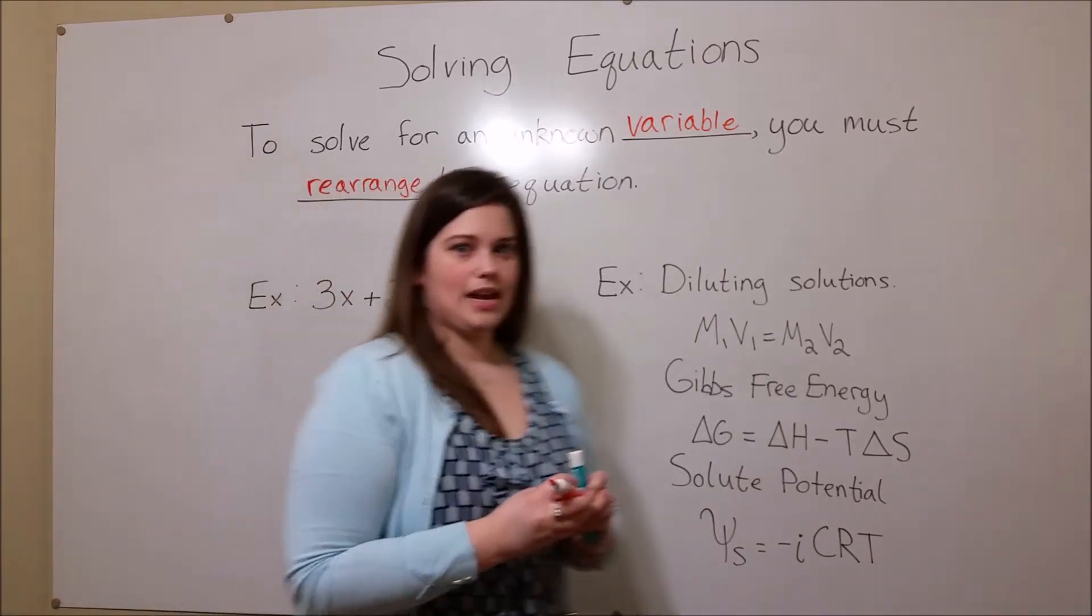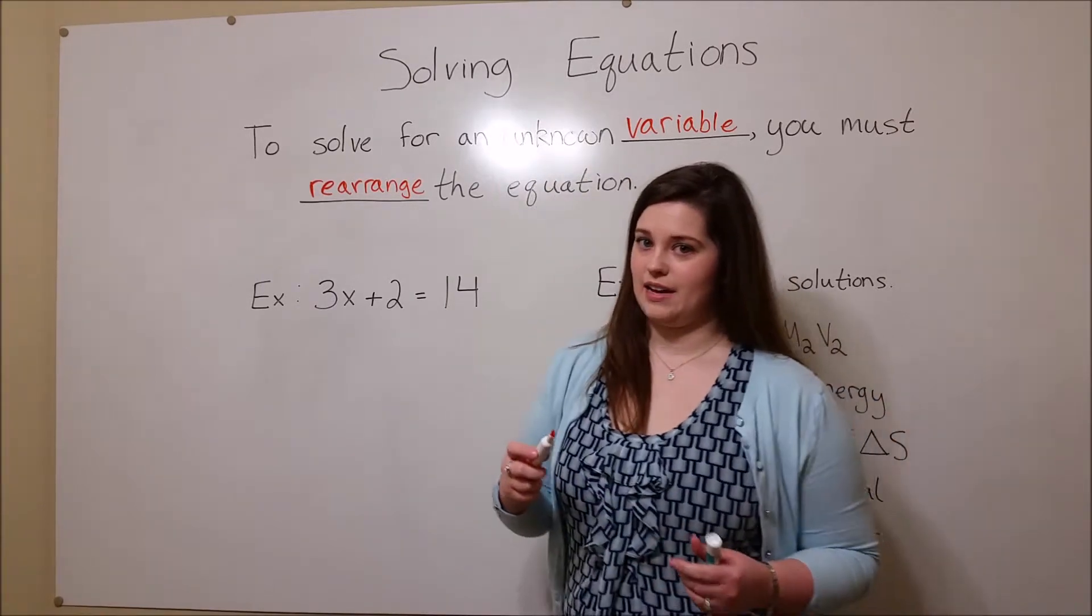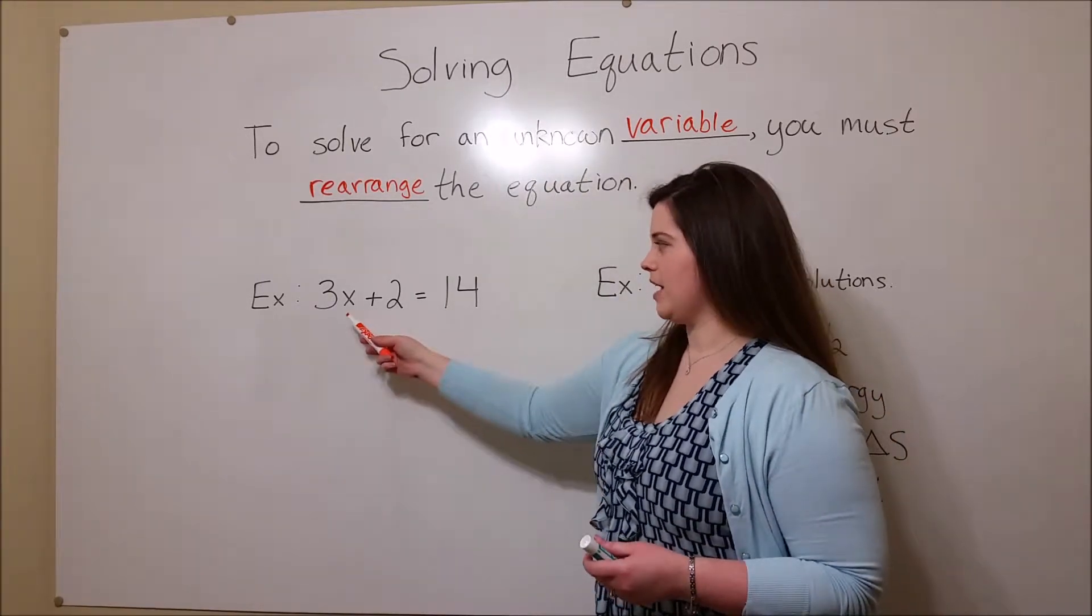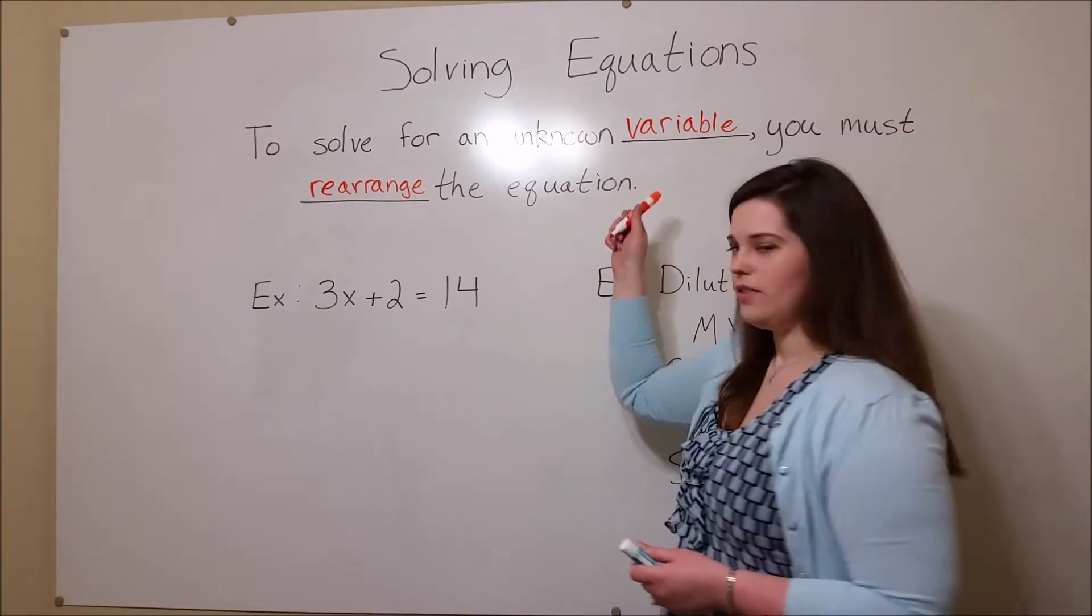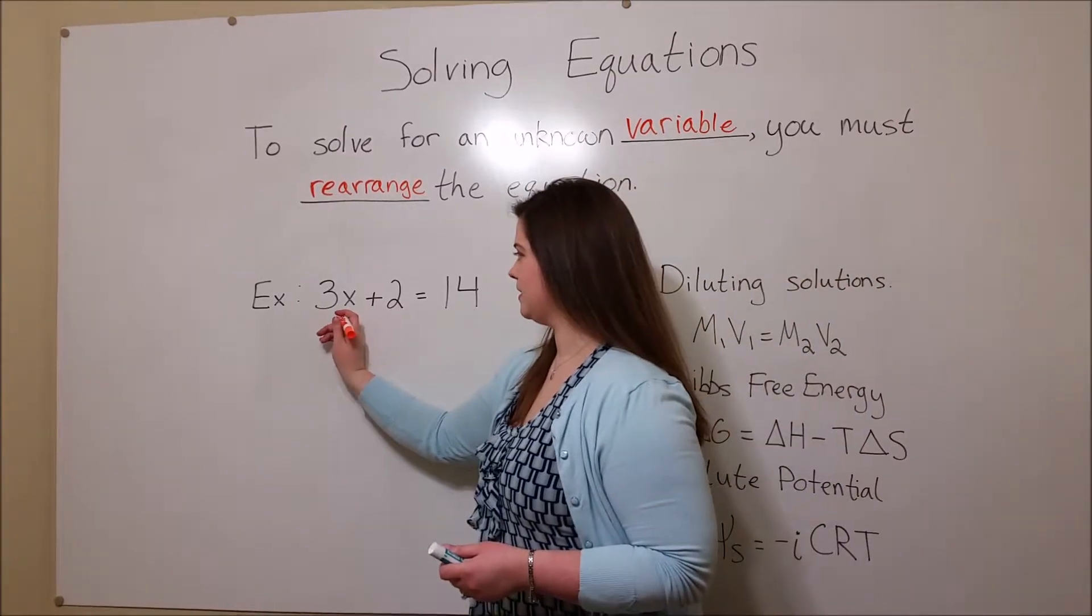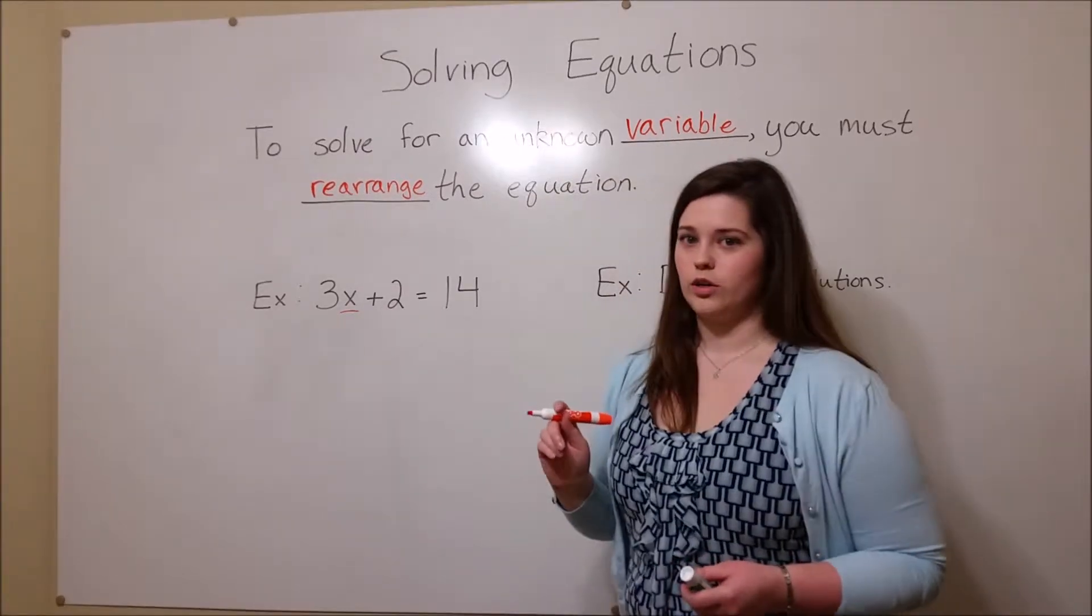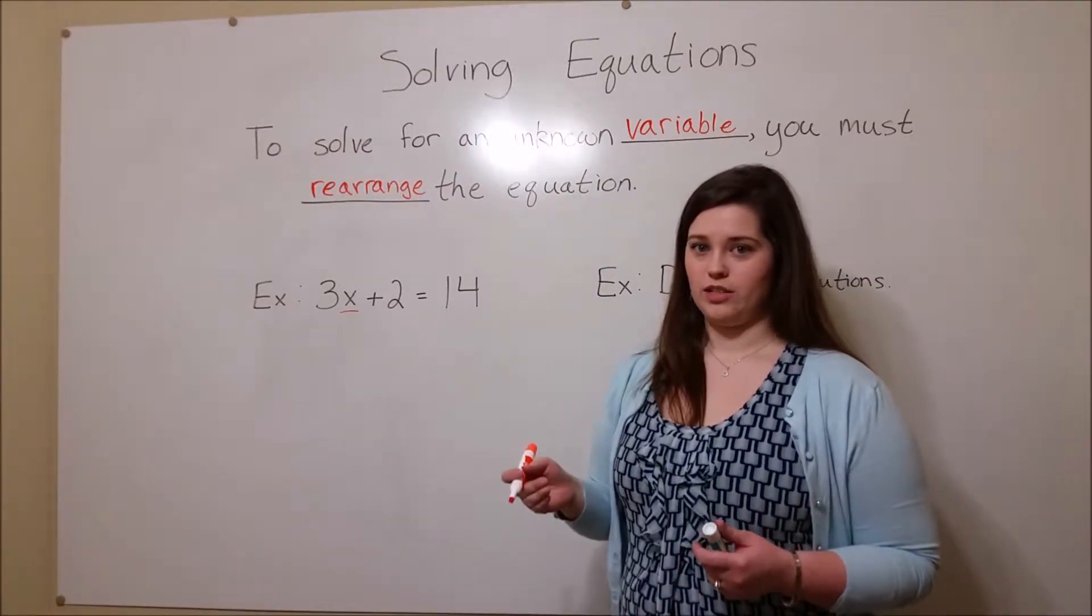A basic example of this is the kind of thing that you've seen in algebra class. Something like 3x plus 2 equals 14. Here, the unknown variable is x. And in order to solve for x, we have to rearrange the equation.